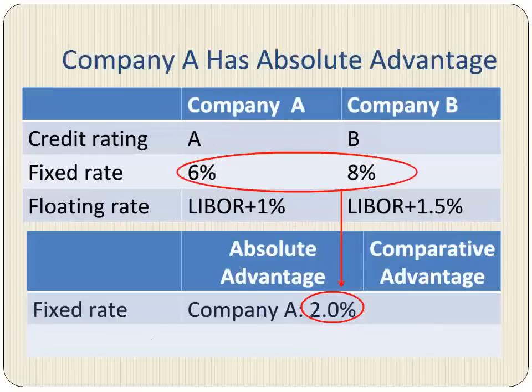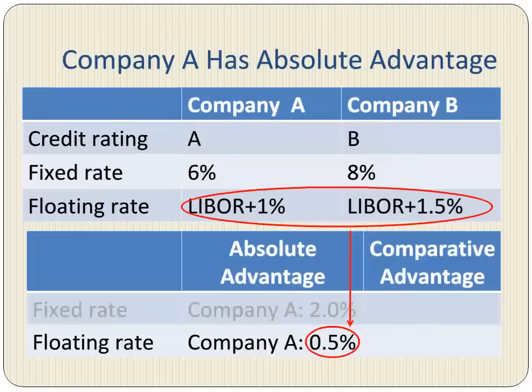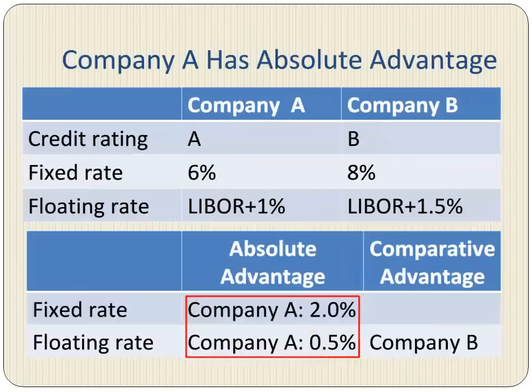When we compare the fixed rates of the two companies, we notice that Company A pays 2% lower, or has an absolute advantage of 2% over Company B. When we compare the floating rates of the two companies, we notice that Company A pays 0.5% lower, or has an absolute advantage of 0.5% over Company B. In other words, investors want Company B to pay a 2% risk premium over Company A at the fixed rate, but only a 0.5% risk premium at the floating rate.